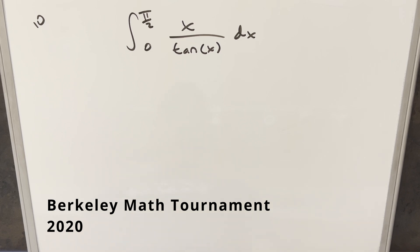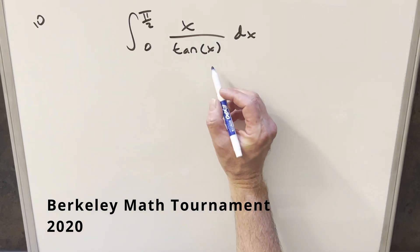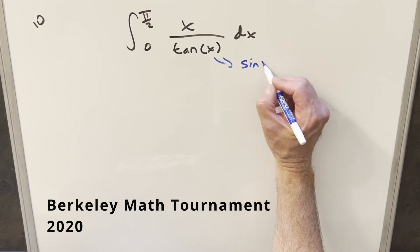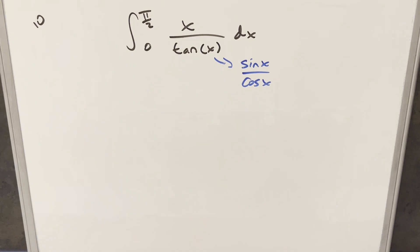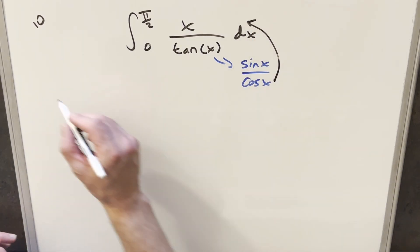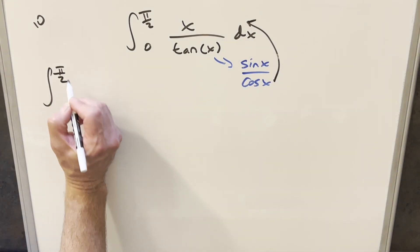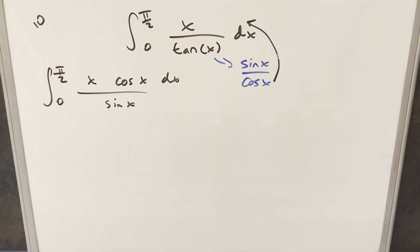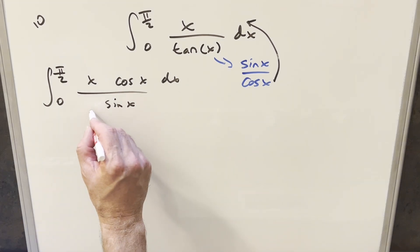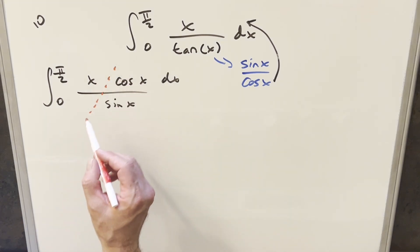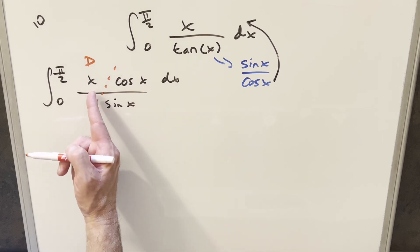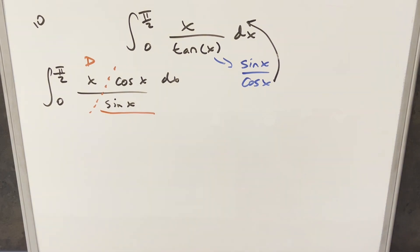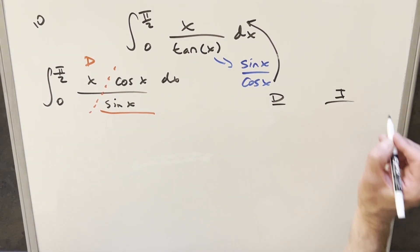This one looks pretty intimidating at first, but there's actually a pretty good way to handle this. If I take tan(x) and break it up into sines and cosines, then flip it so the cosine comes into the numerator, we're going to have x·cos(x)/sin(x) dx. And looking at it this way, it's in pretty good shape for integration by parts. If I differentiate x, that resolves to 1, and we can definitely integrate the other piece. Let's use the DI method.